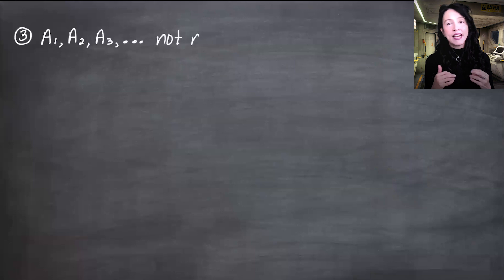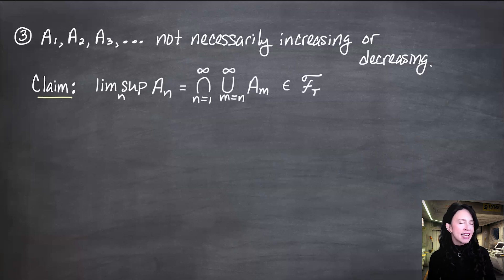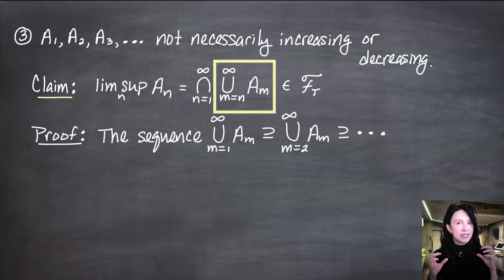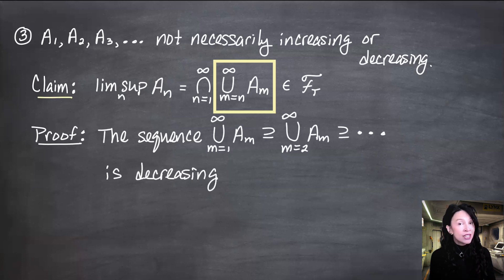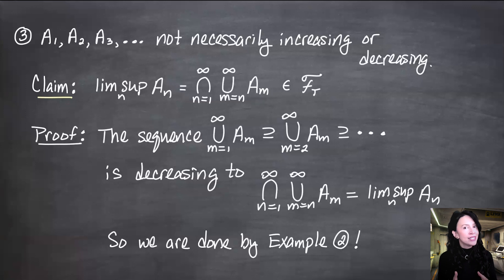For a third example, suppose the events A1, A2, A3, on up are just general — not necessarily increasing or decreasing. I claim that the lim sup of the sequence of sets is in the tail sigma field. We define this as the intersection as n goes from 1 to infinity of the union as m goes from n to infinity of A_m. As n changes, these unions are decreasing — the union from m=2 to infinity is contained in the union from m=1, and so on. So we're looking at a decreasing sequence of sets decreasing to the intersection, which is the lim sup. And we are done by example two.